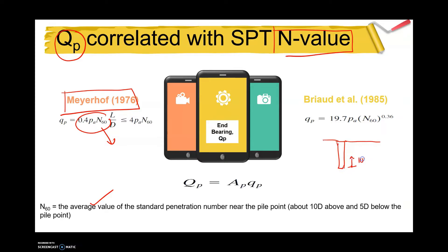We consider 10D above and also 5D below the pile tip.